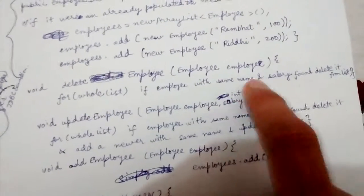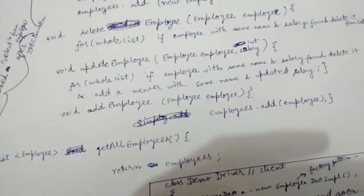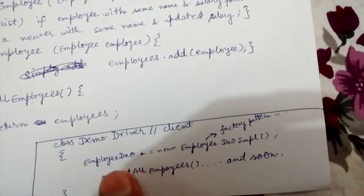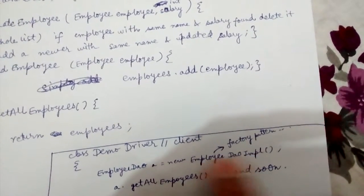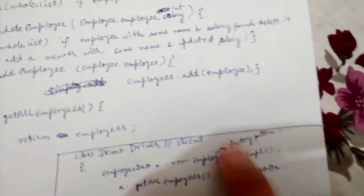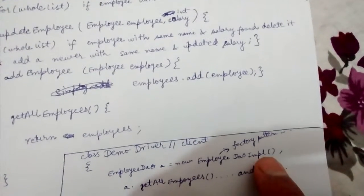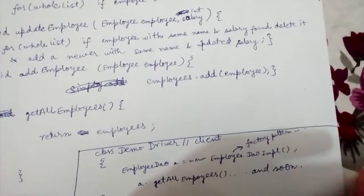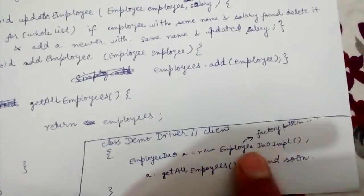For delete: we iterate over the whole list, and if an employee with the same name and salary is found, we delete it from the list — that's all. The client will be using a reference of the interface, so it's not tightly coupled with the implementation class. It can even use a factory pattern — calling EmployeeDAO.getInstance() or EmployeeDAOFactory.getInstance() — so it's not even knowing which implementation class it's going to use.